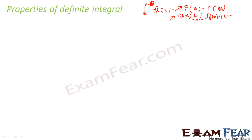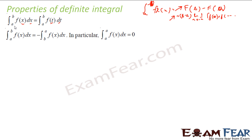Sometimes we can just use some properties of definite integrals to solve the question, where we need not find all these values. One property is: the integral of f dx from a to b is nothing but the integral of f dt from a to b — you can change the variable from x to t, y, z, anything, any notation. Similarly, the integral of f dx from a to b is nothing but minus of the integral of f dx from b to a. So if you change the upper limit and lower limit, you get a negative sign.